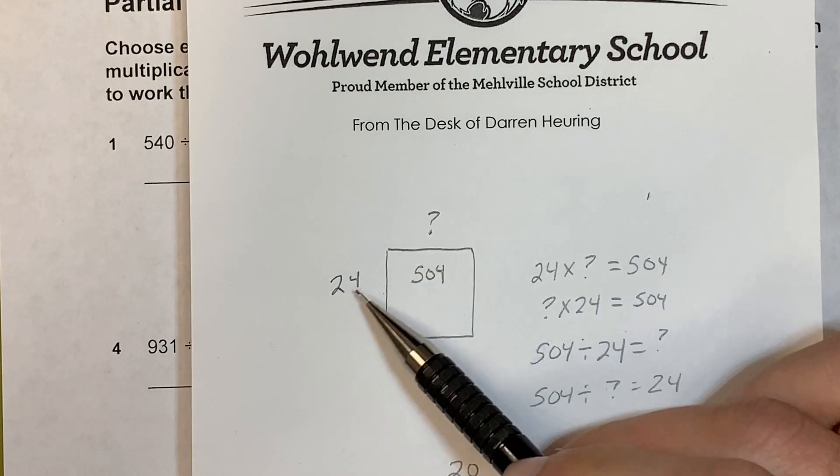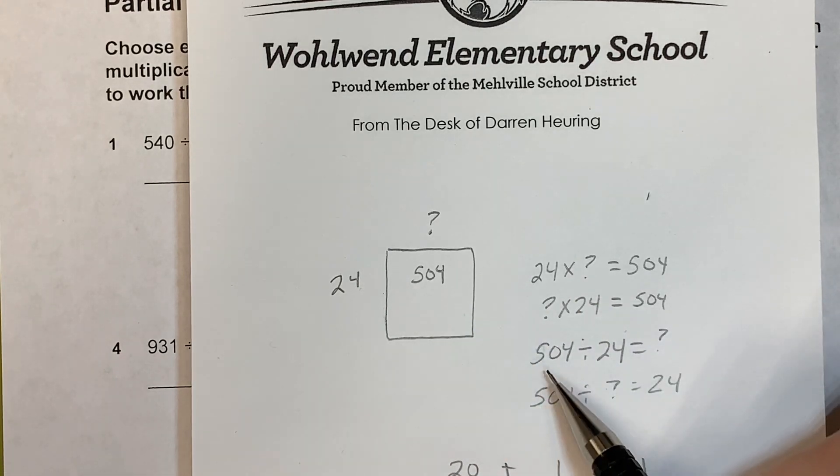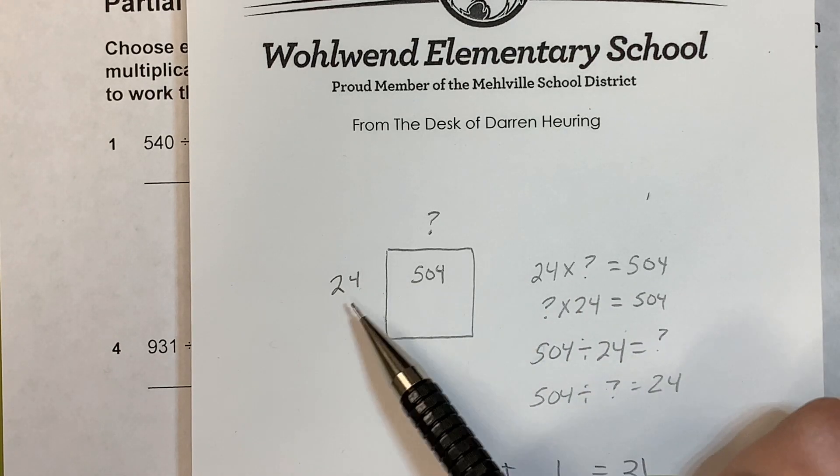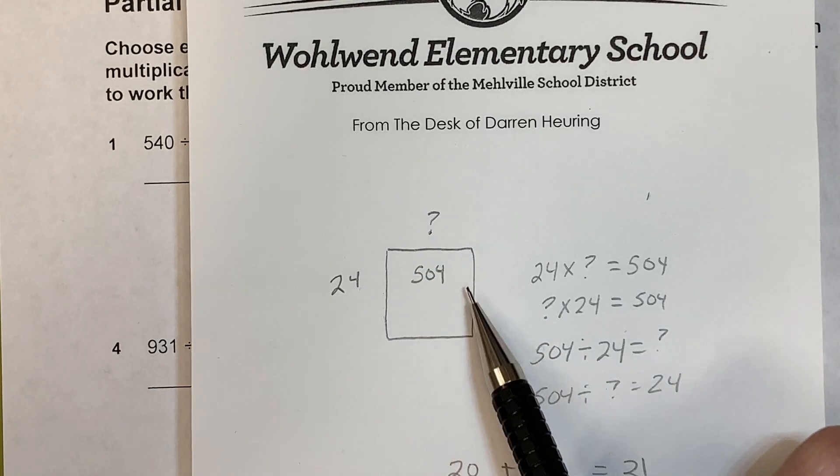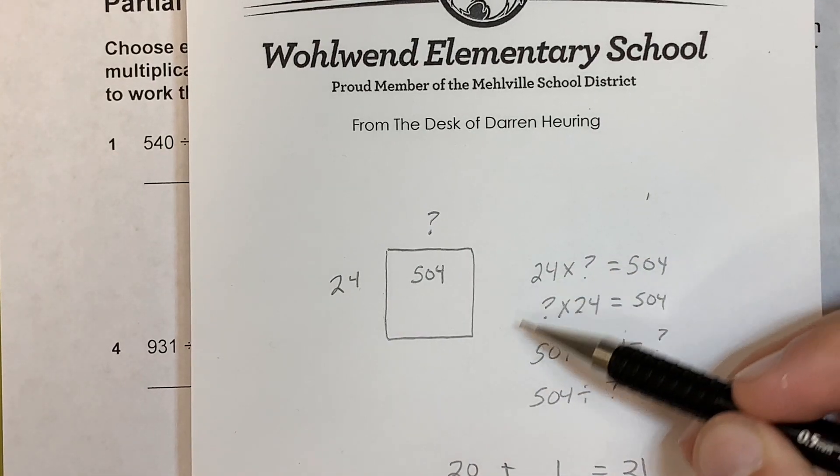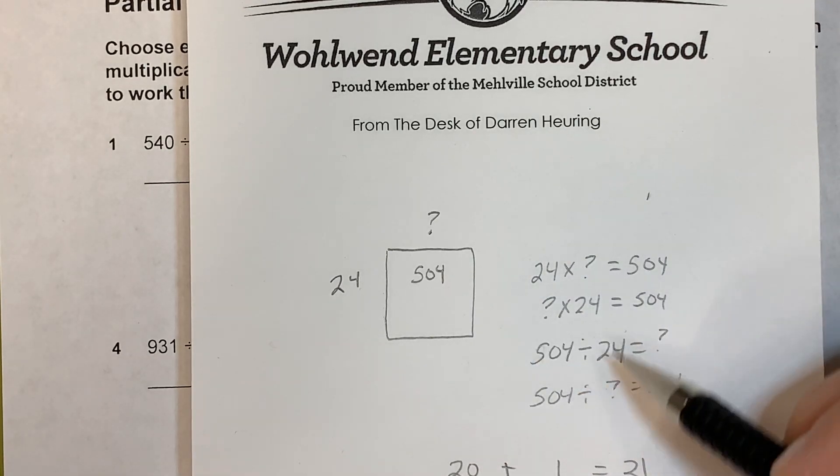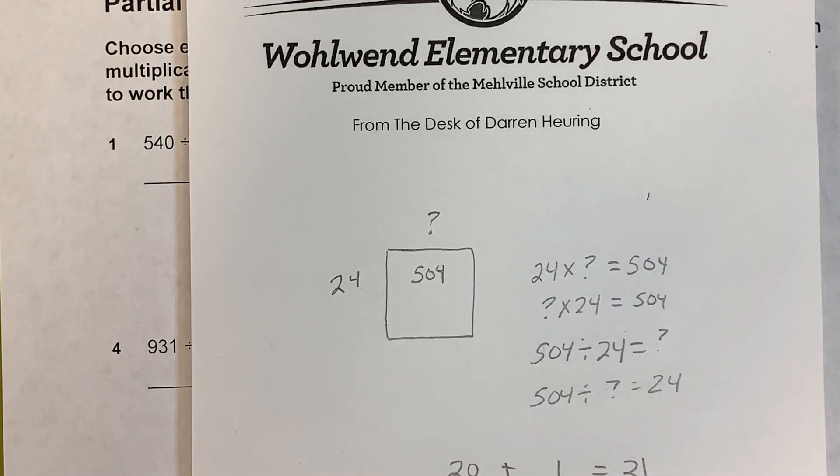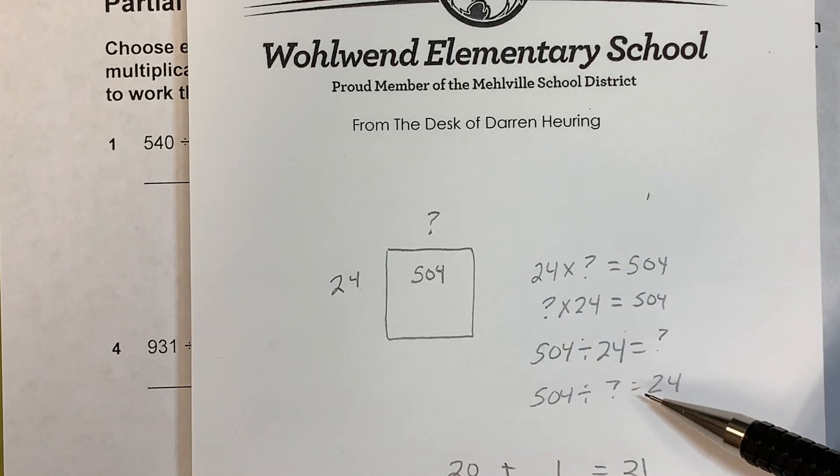I could write 24 times what gives me 504, or what times 24 gives me 504. I can write 504 divided by 24 gives me what, or 504 divided by what gives me 24. We need to understand that there's many different ways to write this and what they're asking for.